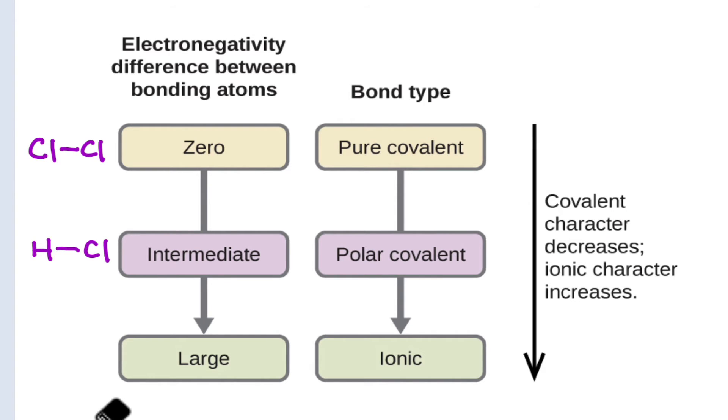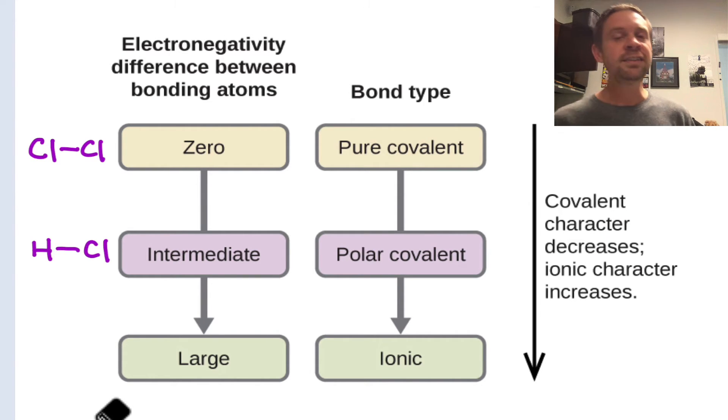Finally, we have very large differences in electronegativity, and this happens when we're thinking about a bond between an atom on the left-hand side of the periodic table, which tends to form cations, and on the right-hand side of the periodic table, which tends to form anions. In these situations, when those atoms get together, they'll form ions on their own spontaneously.